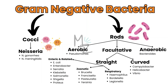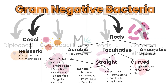The enteric and related straight facultative gram-negative rods include E. coli, Enterobacter, Serratia (today's topic), Klebsiella, Salmonella, Shigella, and Proteus. The zoonotic group includes Brucella, Francisella, Pasteurella, and Yersinia. The respiratory group includes Haemophilus, Bordetella, and Legionella.